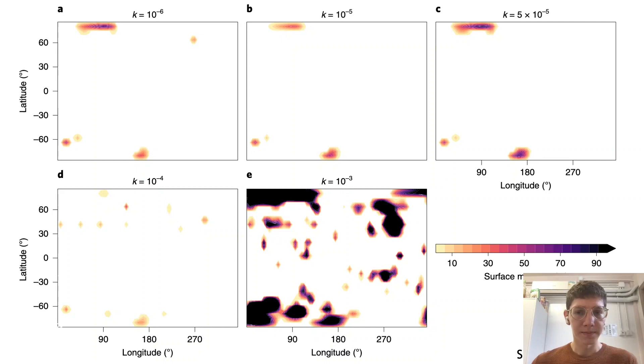This is the distribution of surface liquid methane averaged over the final 20 Titan years of each simulation by Faulk et al. The hydraulic conductivity K of the surface is shown for each case and corresponds to different permeabilities. Subsurface transport is dependent on hydraulic conductivity, which describes the ability of liquid to flow through pore space and depends on the permeability of the porous medium, liquid density, gravity, and dynamic viscosity.